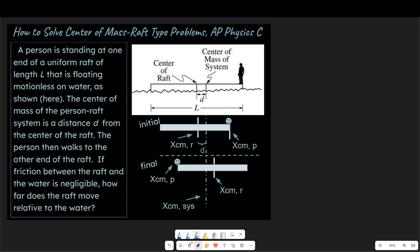So first let's read the problem on the left. It says a person is standing at one end of a uniform raft of length L that is floating motionless on water. As shown here, the center of mass of the person-raft system is a distance d from the center of the raft.